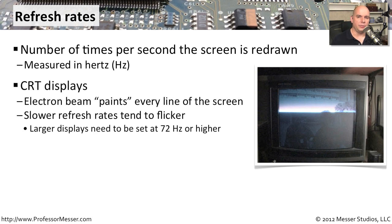On CRT displays, the refresh rate was measured by how long it took the electron beam to paint everything on the display. That beam had to go line by line on the entire screen, and so it had to work very hard when resolutions and screens got much larger. Whenever the refresh rate dropped below 72 hertz, especially for really large displays, the human eye started to see flickering, which got very annoying.